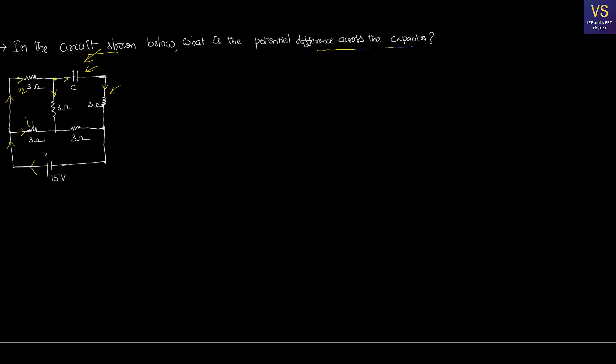For the purpose of calculating current distribution, these two elements — the capacitor and the 3 ohms in series with it — are dead elements in the circuit because the capacitor is fully charged and not allowing any further flow of charge. So I can ignore both those elements. I2, after reaching the junction, will go only towards the other 3 ohms. Then I1 and I2 join and become the total current, reaching back to the negative terminal of the battery.